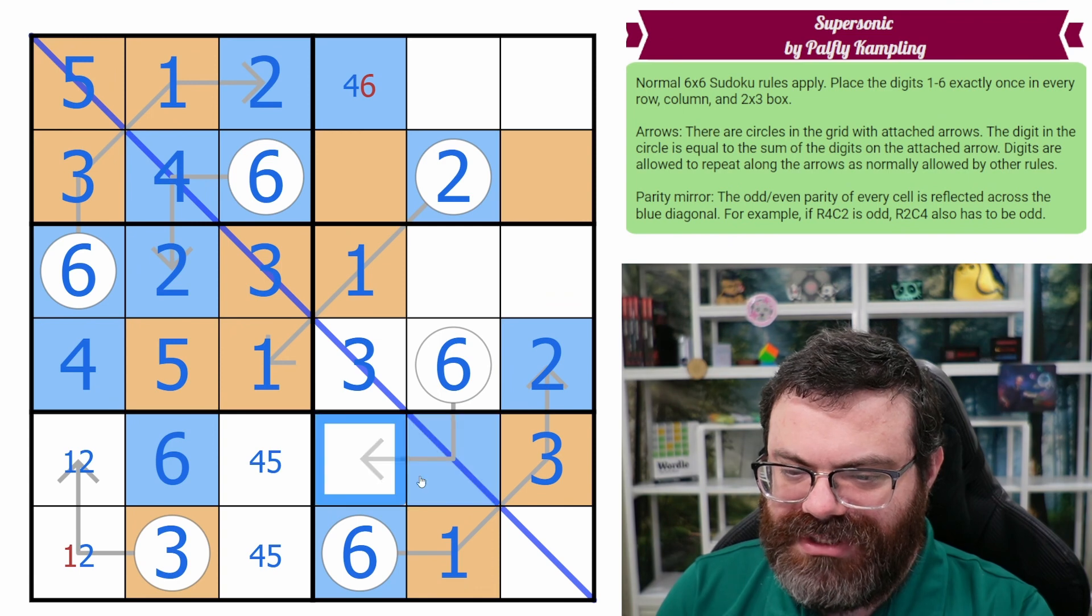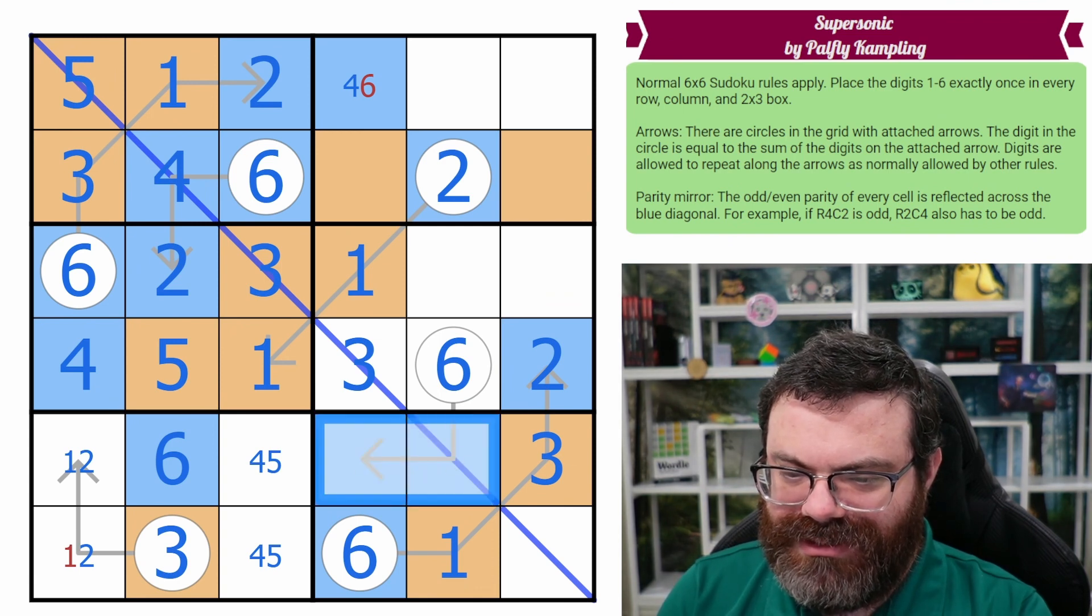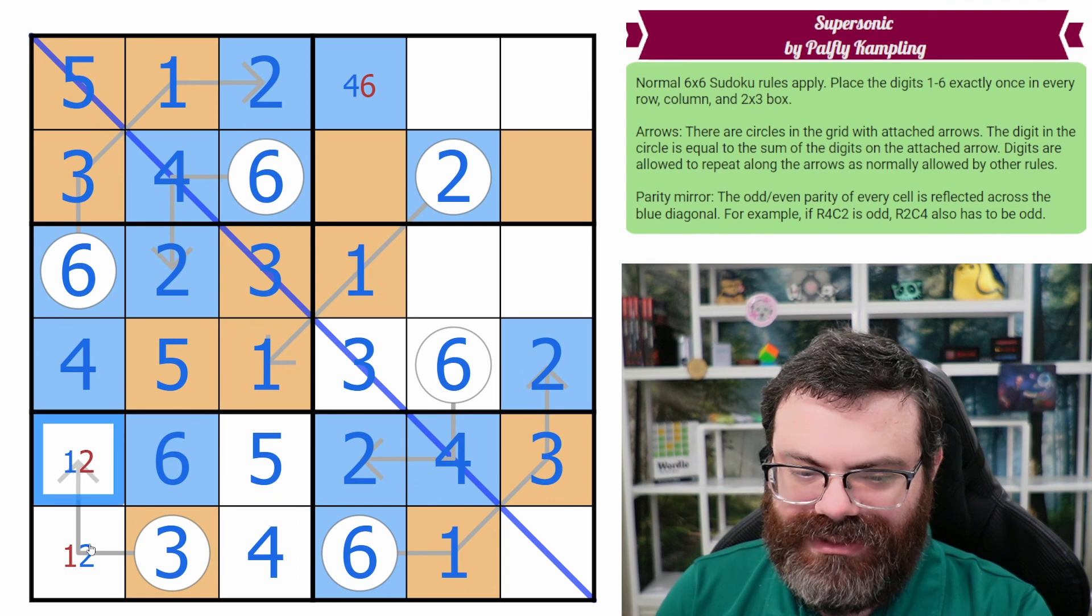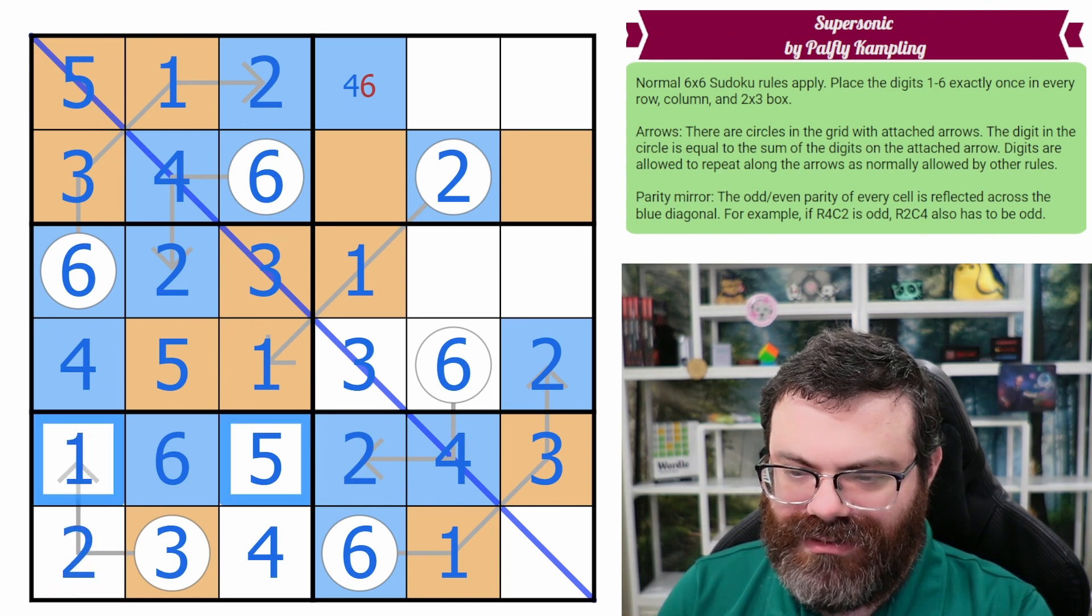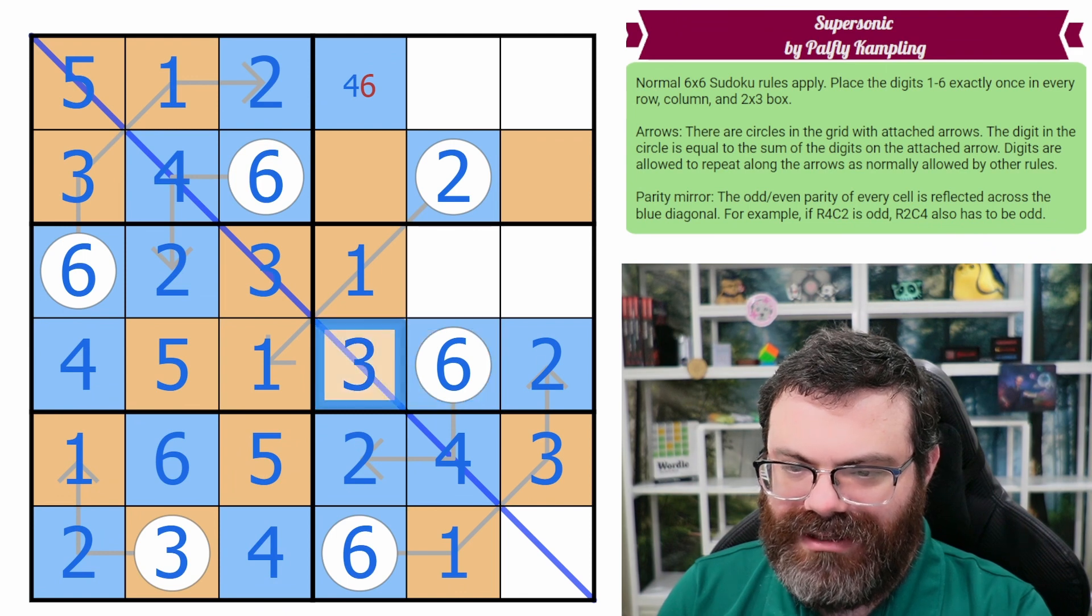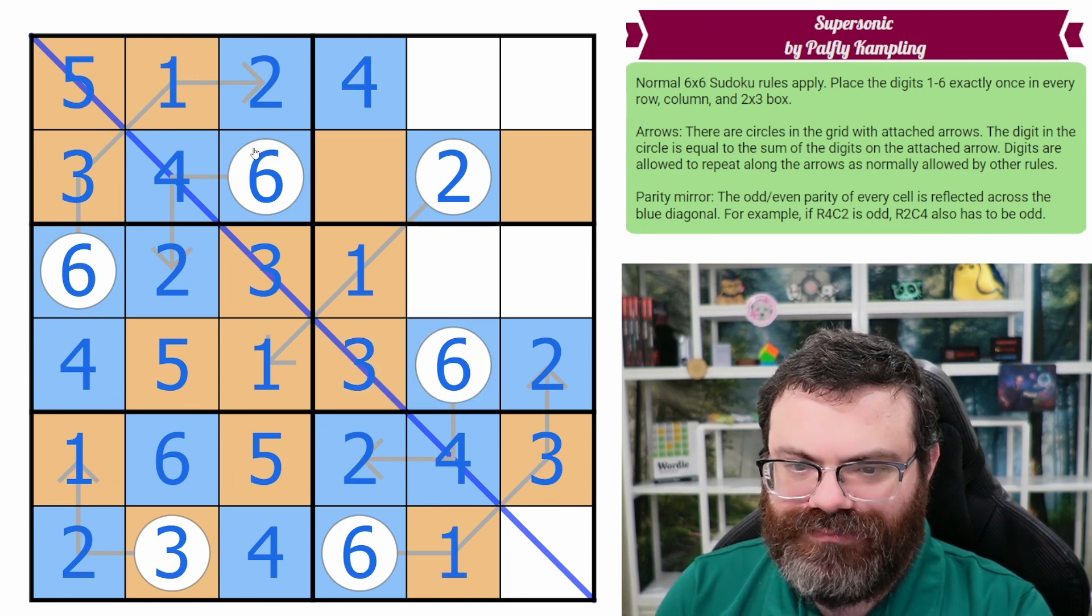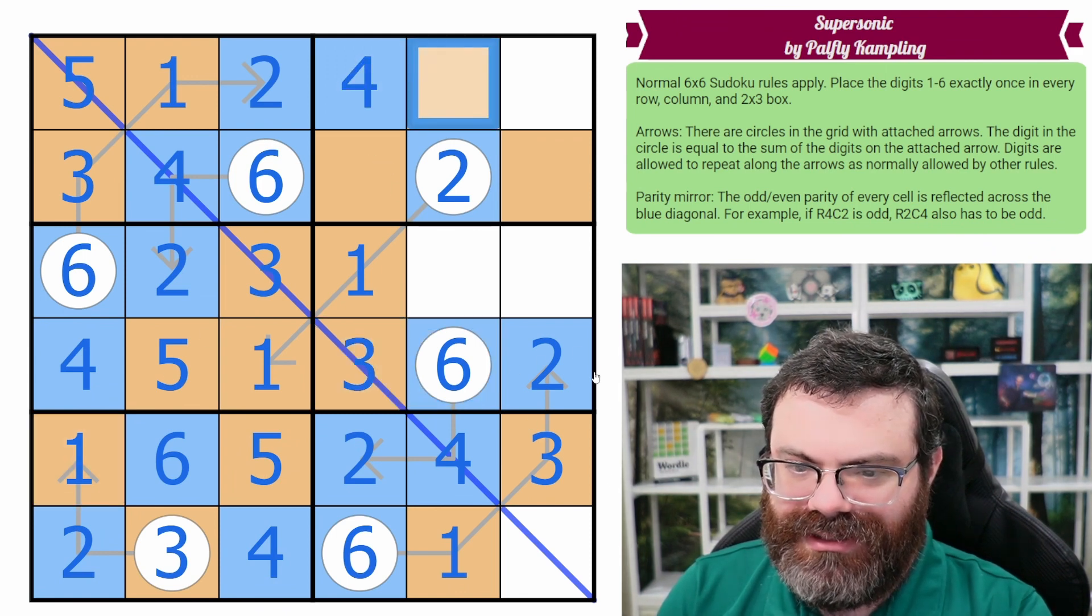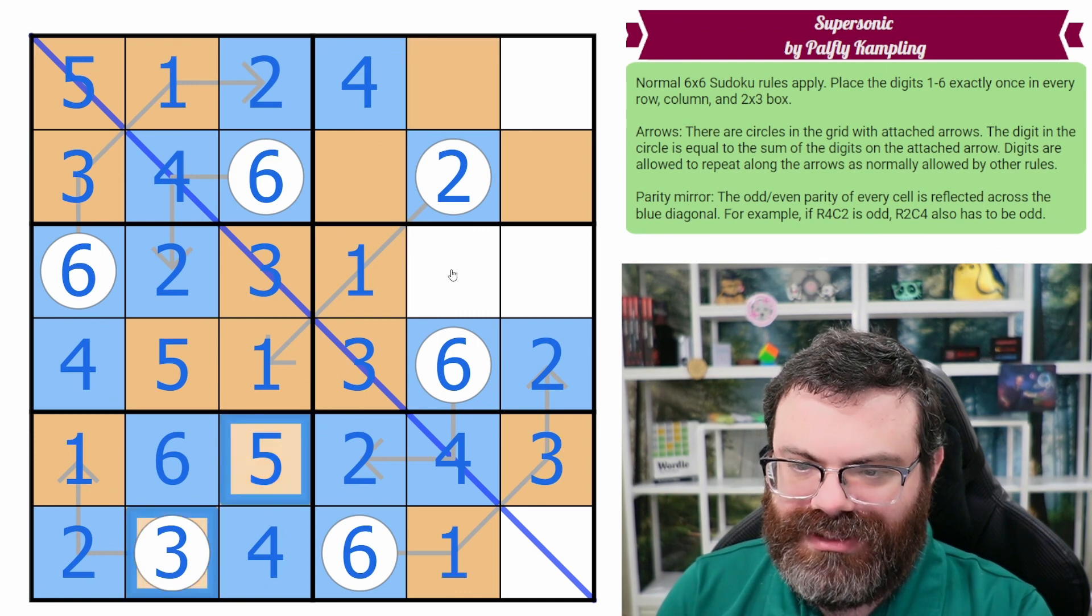If we're going to use an even number to add to six, we have to use another even number. It's going to be a two, four pair. It gives us all of these digits, which we can color and we can parity mirror all this stuff, although it may not be necessary at this point, but let's do it. This one parities here. These mirror here.